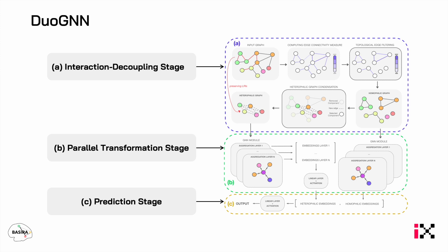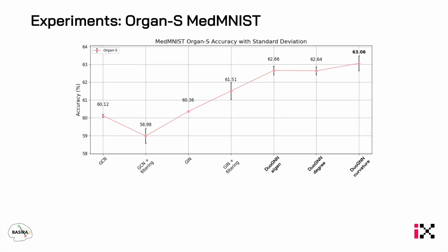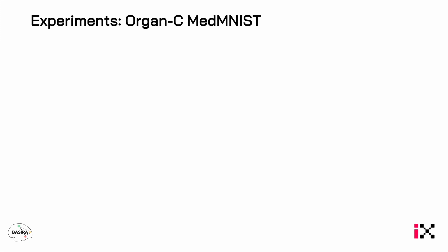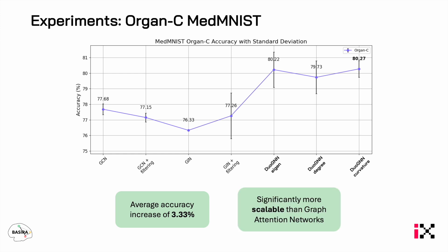Now we proceed with the experiments. We first test our model on OGBN-S, showing an increase in accuracy of 2.52 percent and that our model is much more scalable than graph attention networks. We also test on OGBN-C, which is another medical dataset, showing an average accuracy improvement of 3.33 percent, and our model is much more scalable than graph attention networks, which in this case return an out-of-memory error when processing the dataset.